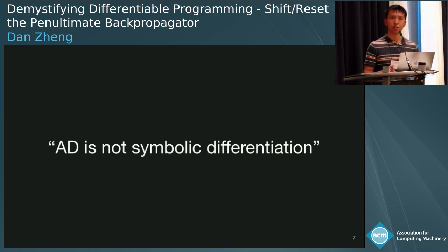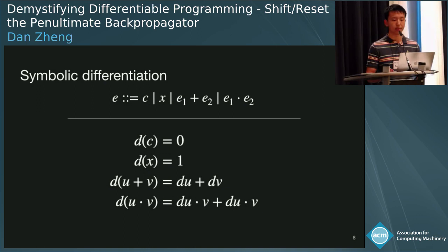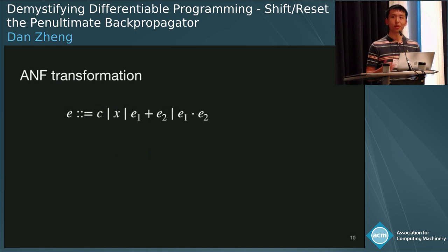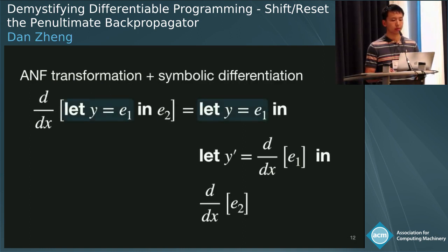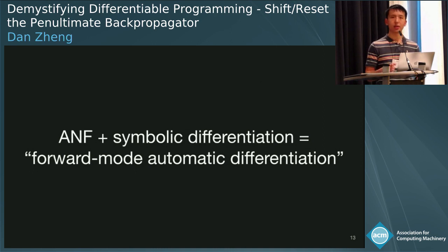The first idea is AD versus symbolic differentiation. With a simple expression language with addition and multiplication, we can write derivative rules: the derivative of a constant is 0, the derivative with respect to x is 1, and we have the sum and product rule — familiar from high school calculus. One commonly cited problem with symbolic differentiation is code explosion: just differentiating x squared plus x cubed produces nested differential operator calls with many common sub-expressions, which is inefficient. But as functional programmers, we can solve this via an ANF transformation. Adding a let expression and writing a rule for its derivative, we see only one additional let binding per original binding, so the derivative has the same asymptotic complexity. This combination of ANF and symbolic differentiation is actually forward mode automatic differentiation.